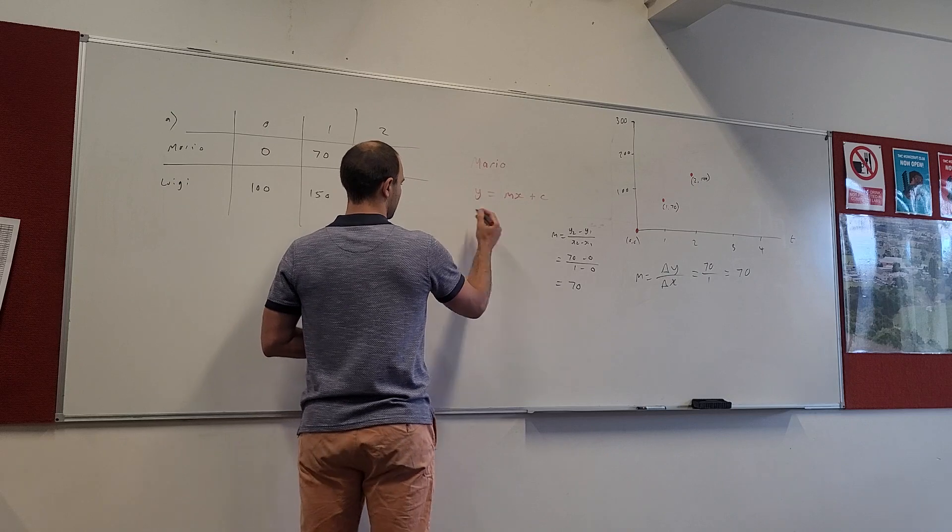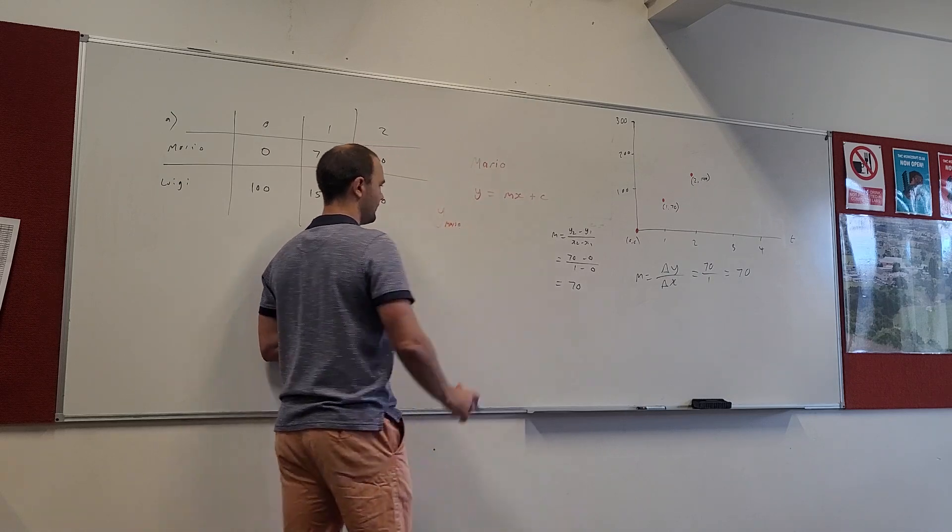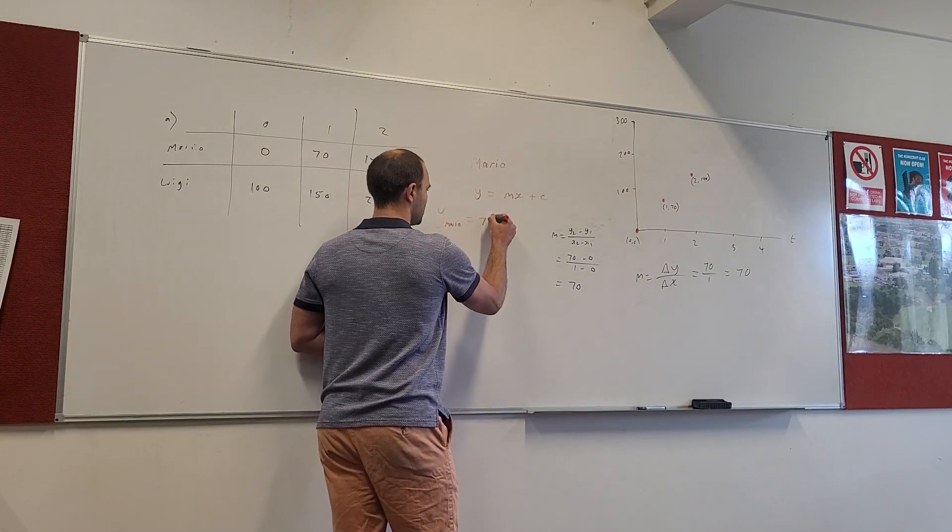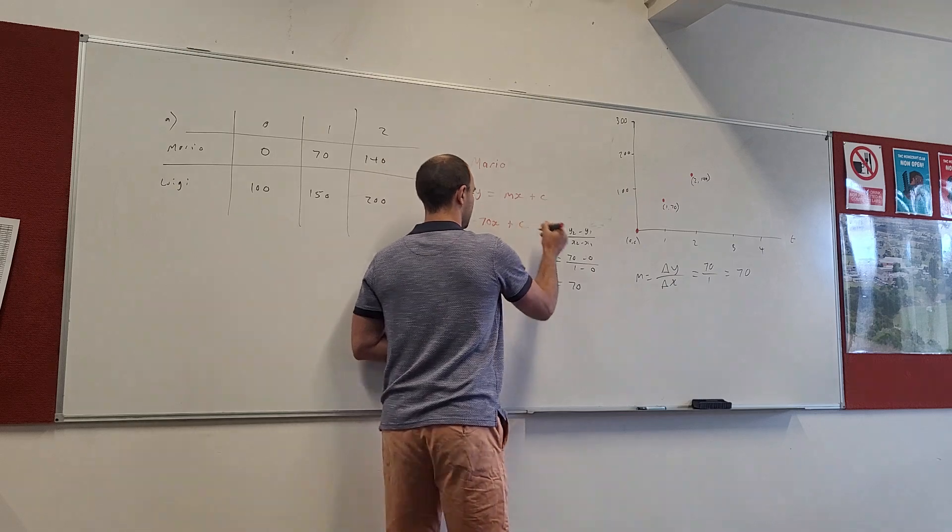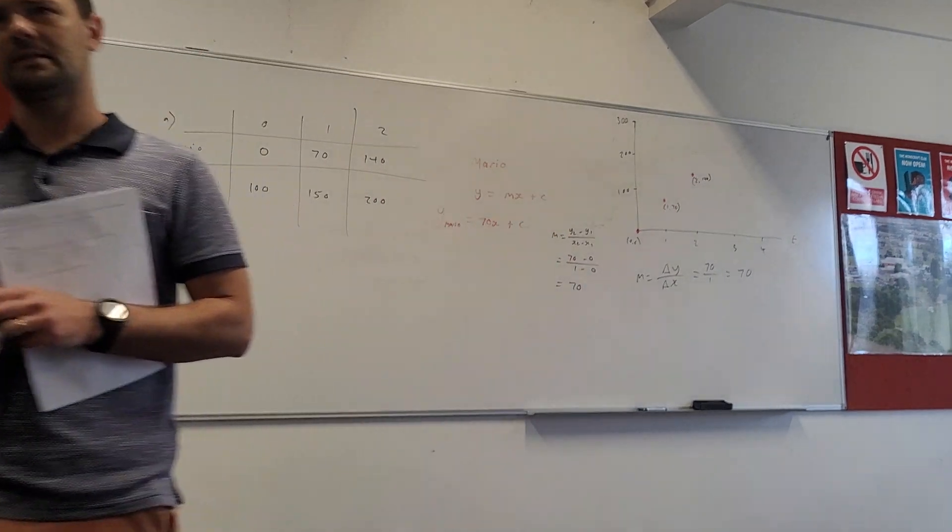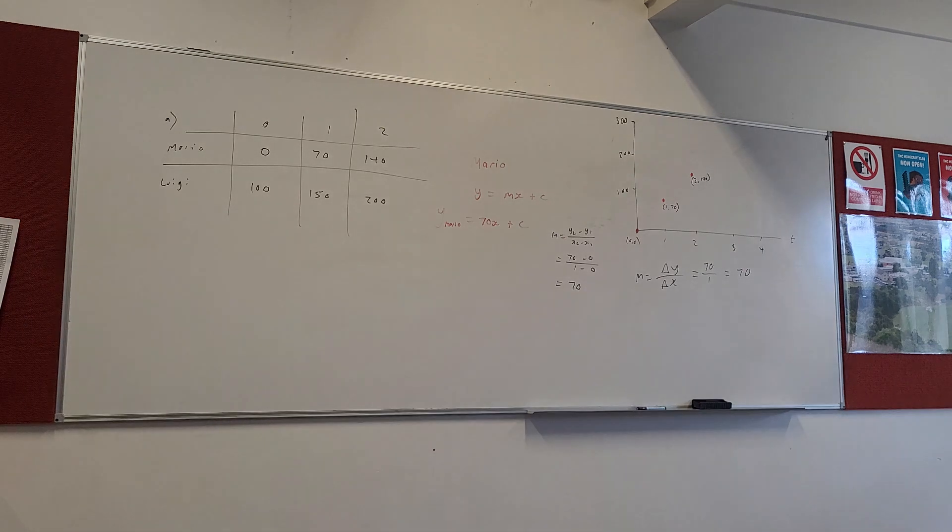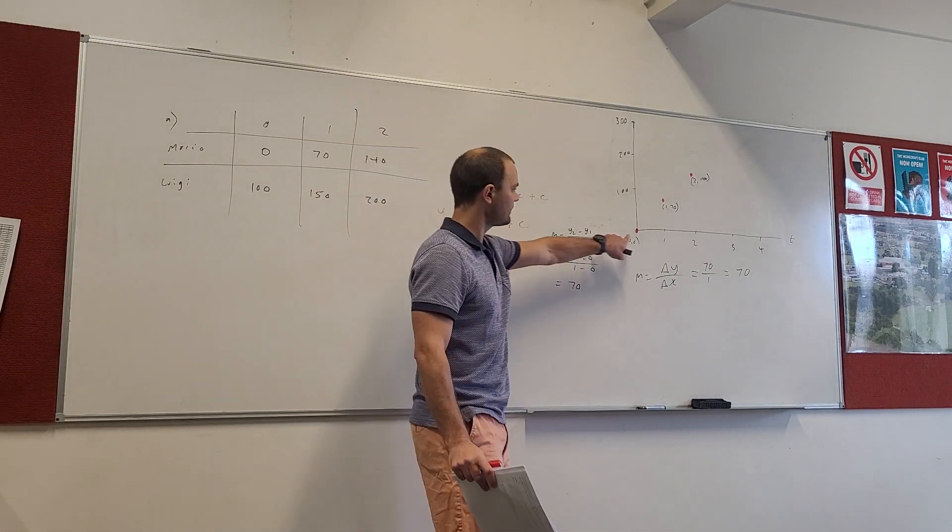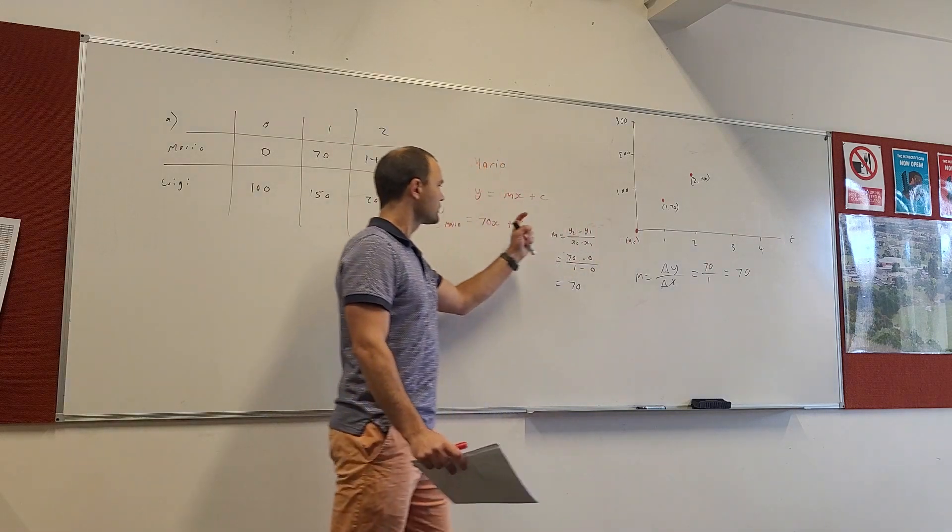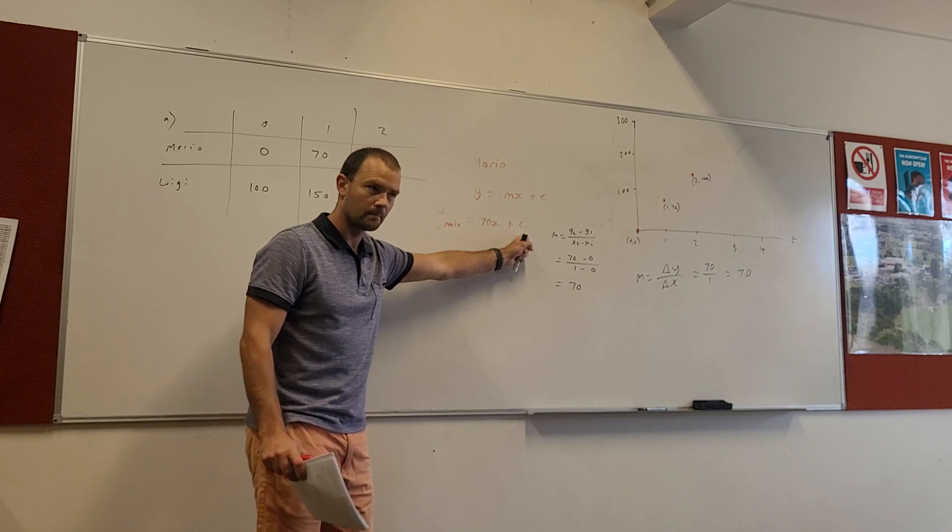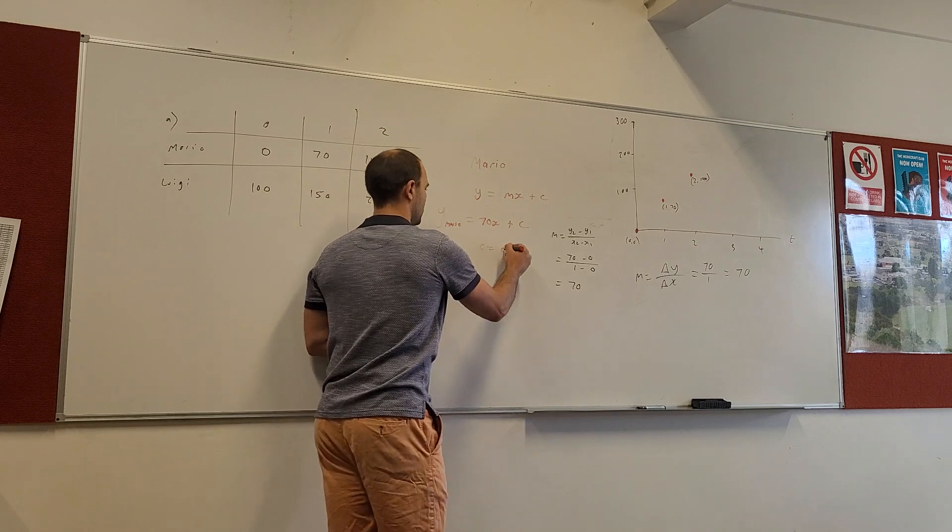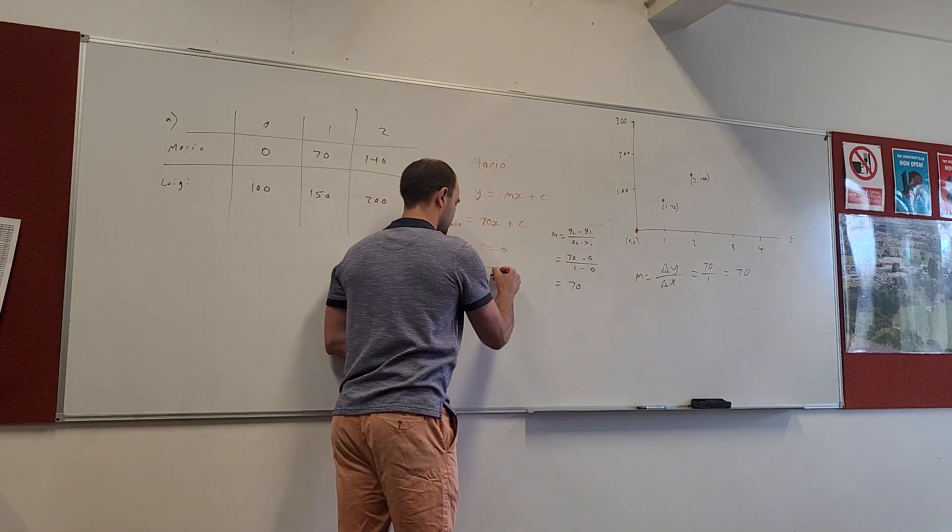So, we can write it like this. Y of, and we could put a subscript, y of Mario, the equation of the line for Mario, or y of m, equals 70x plus c. Alright? 70x plus c. This is how we were doing it last lesson. We need to know, what is the value of c? c is the y-intercept. Zero, zero. Okay? We can see the y-intercept. It occurs here. When x is 0, y is 0. So, the value of c is 0. Alright? c equals 0. We can see it from here. Therefore, Mario's equation is just 70x.